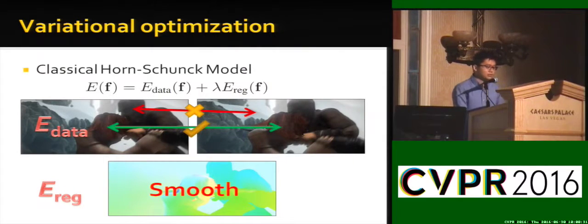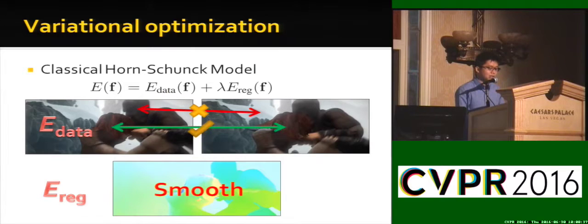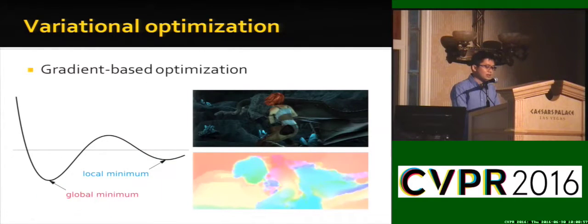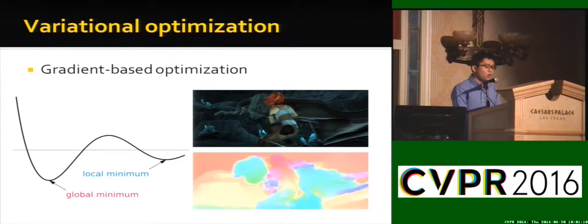Our approach to optical flow starts with the classical approach, which is to optimize an objective. The data term assumes brightness consistency. The smoothness term assumes that the optical flow should be smooth. We update the flow by gradient-based steps while a local refinement is maintained. While this local refinement can optimize the objective...